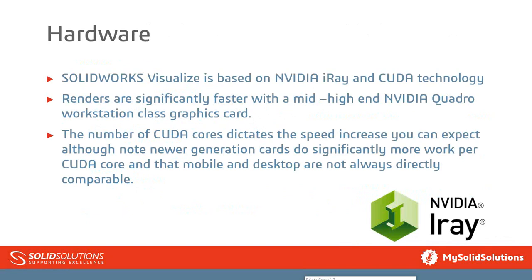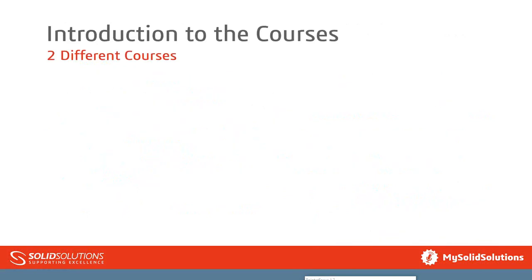The number of CUDA cores dictates the speed, and new generations do significantly more work per CUDA core than older ones. We're going to produce a blog on this — my colleague Alan Sweetenham is doing testing on different specs to see what sort of speeds he can get. We've had a few new laptops on loan from Dell to try this out. If you are doing a lot of renders regularly, it may be worth investing in one high-spec machine and queueing everything to it.